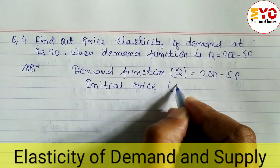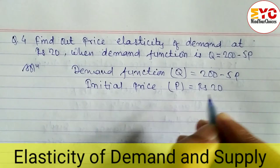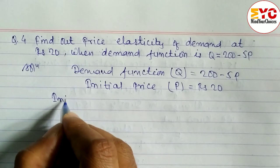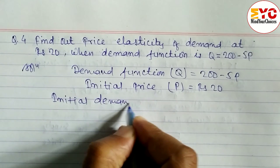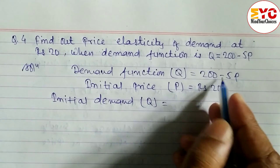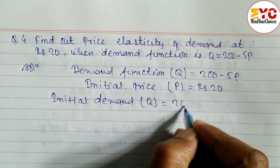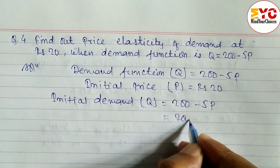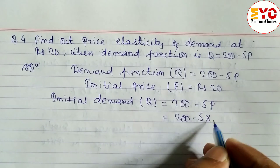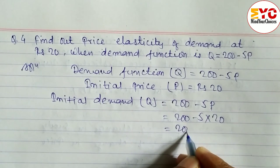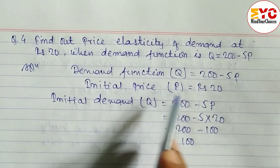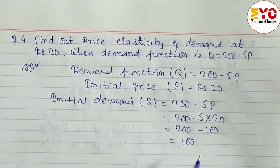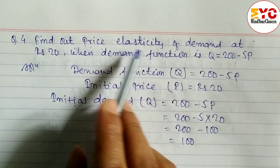The initial price is p equal to rupees 20. First, we have to find out the initial quantity demanded. We take the demand function: q equals 200 minus 5p, and put in the value of p equals 20. So 200 minus 5 into 20 equals 200 minus 100, which equals 100. So the initial price is 20 and the initial demand quantity is 100.